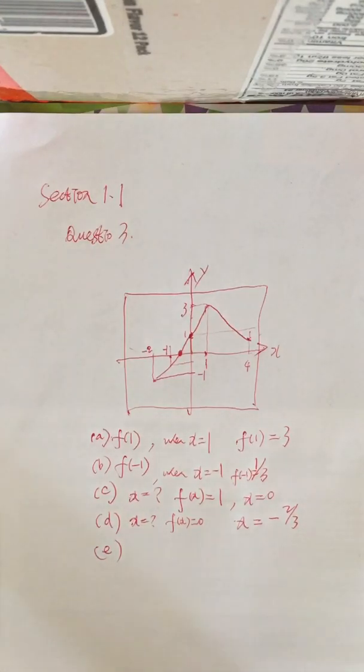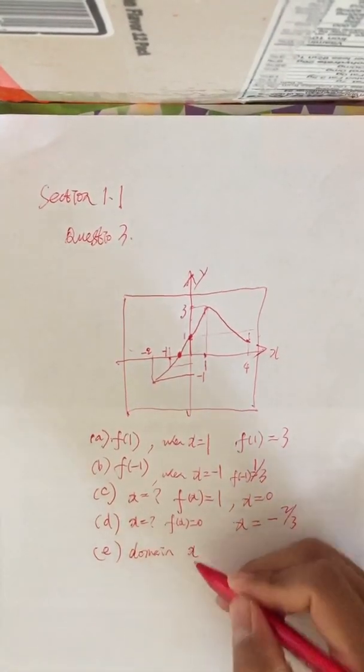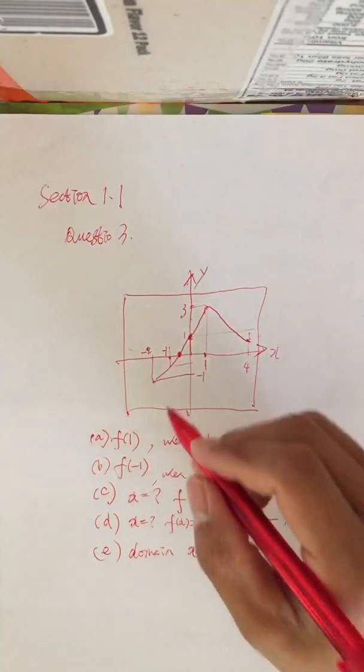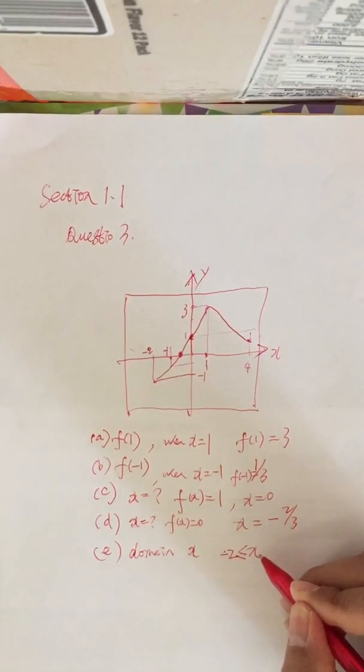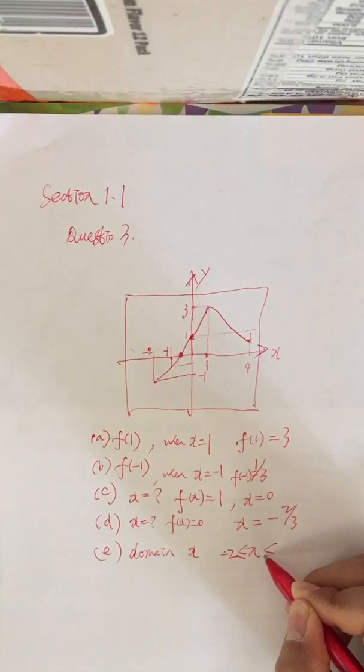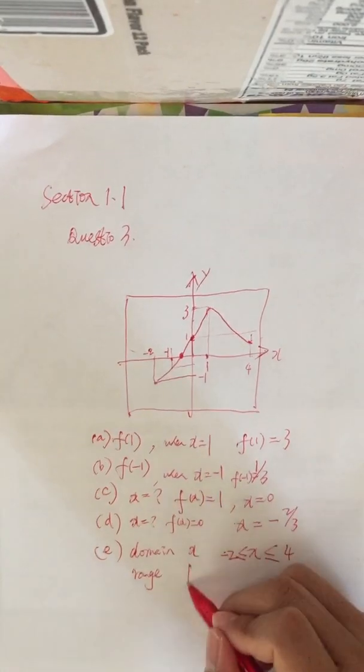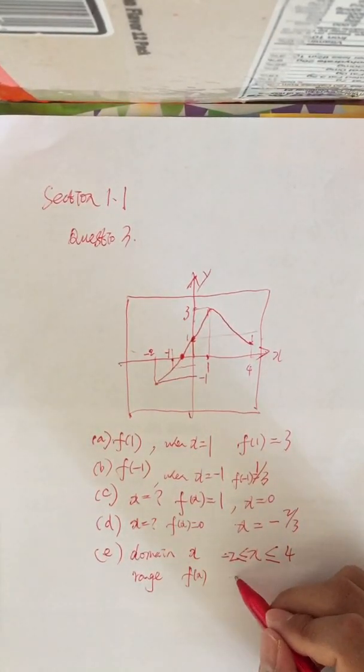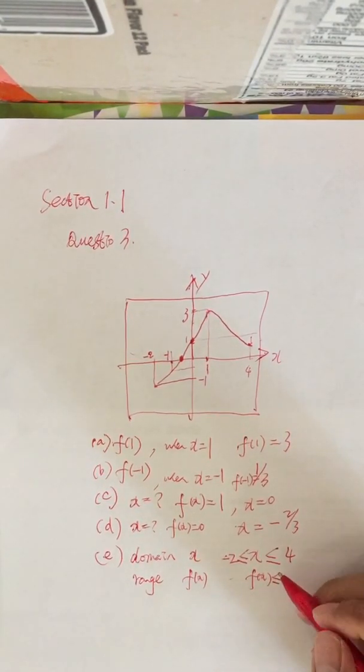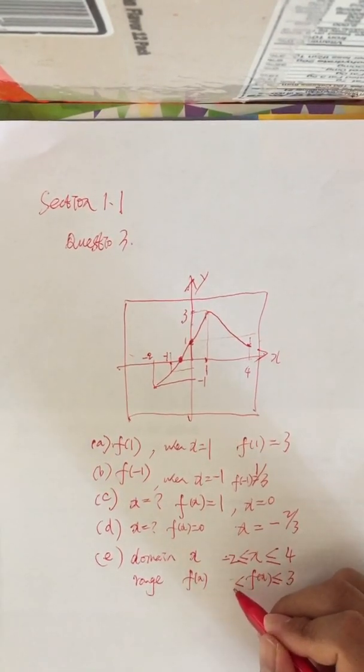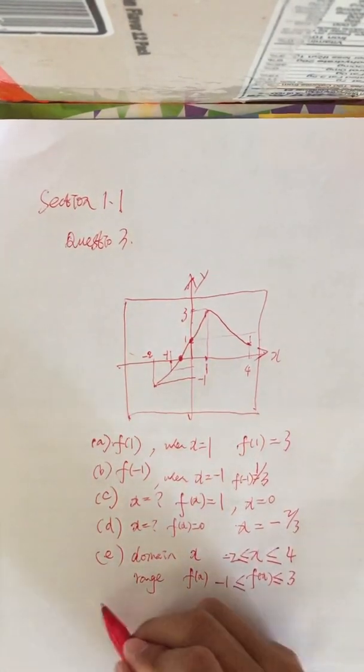Part (e): state the domain and range. From the picture, the domain is x greater than or equal to negative 2 and less than or equal to 4. The range is f(x) less than or equal to 3 and greater than or equal to negative 1.